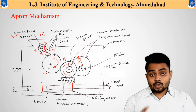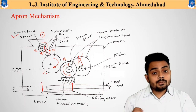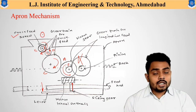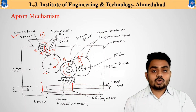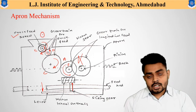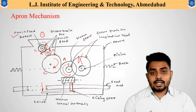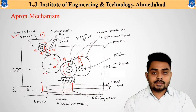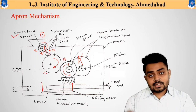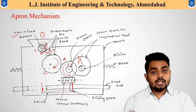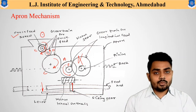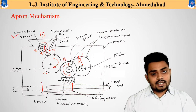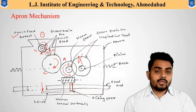The motion is transmitted using the apron mechanism to finally obtain longitudinal or crosswise movement. This simple pictorial arrangement shows how this particular mechanism operates. The combination of the tumbler gear mechanism and the apron mechanism together produce both movements.